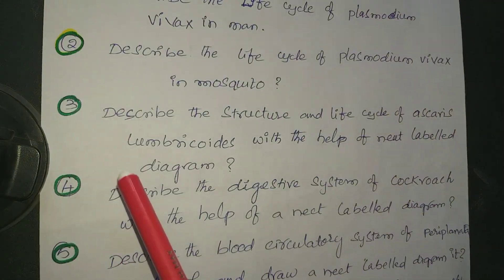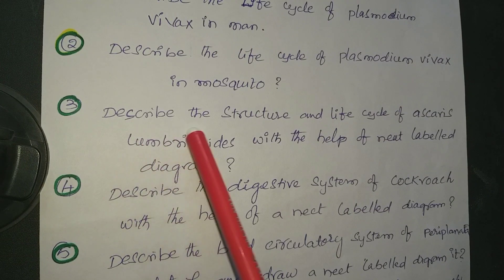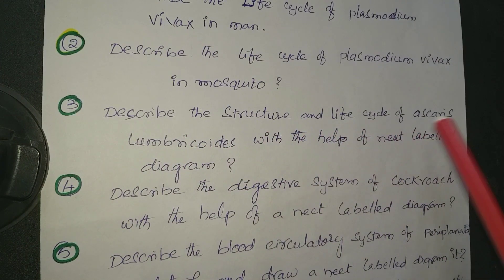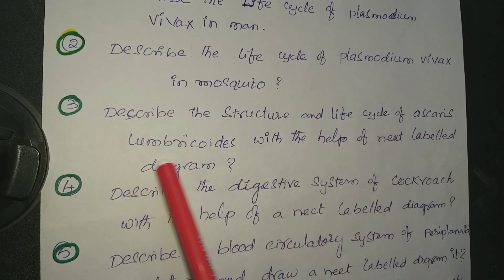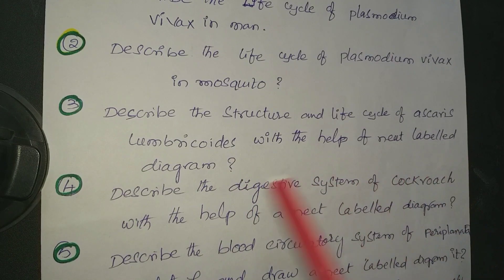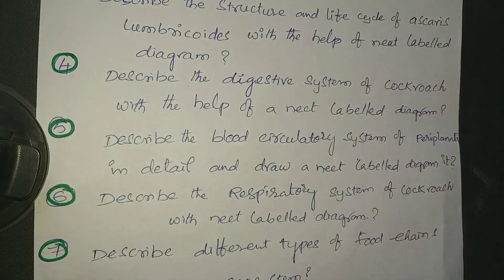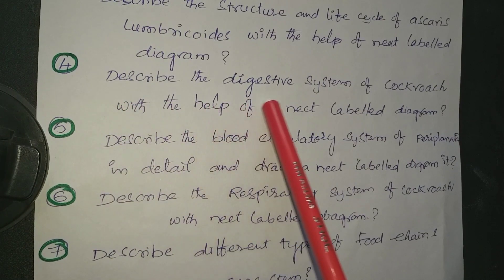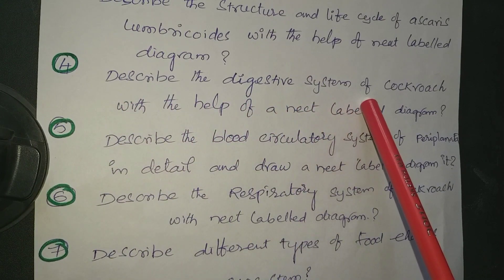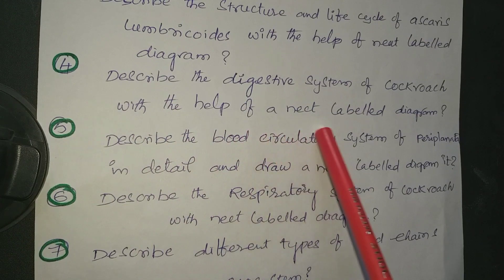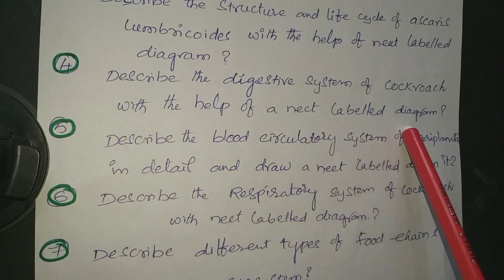3rd question: Describe the structure and life cycle of Ascaris lumbricoides with the help of a neat labelled diagram. 4th question: Describe the digestive system of Cockroach with the help of a neat labelled diagram.